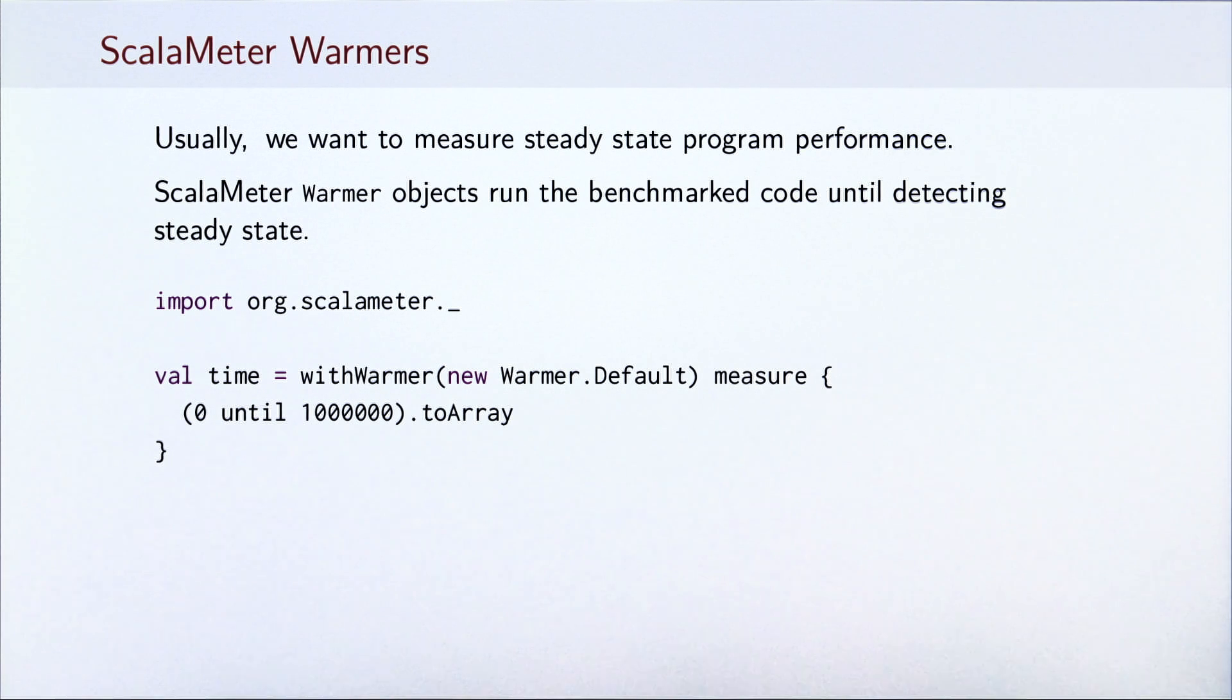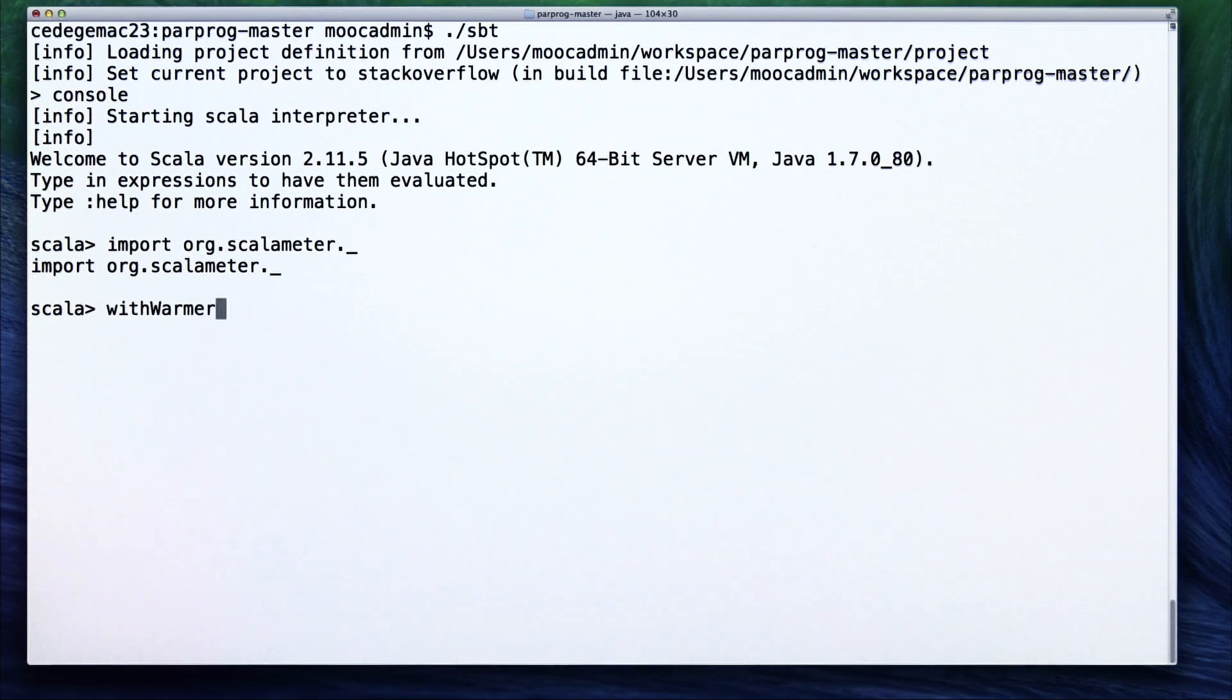It turns out that Scalameter can help us here. Warmer objects run the benchmark code until detecting steady state. And they ensure that the JVM is properly warmed up before a measurement is executed. We specify the warmer with the withWarmer clause and in this case we use the default warmer implementation. Let's ensure that the runtime reaches the steady state before we run our benchmark. We do this with the following withWarmer statement, which precedes the measure call.